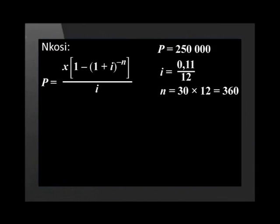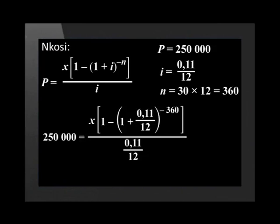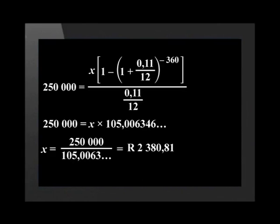Some people prefer to substitute the values first and then solve for x. Let's redo Nkosi's calculation using this method. We substitute to get: 250,000 equals x multiplied by open bracket one minus open bracket one plus 0.11 divided by 12 close bracket to the power of minus 360 close bracket, over 0.11 divided by 12. Punching these values into the calculator gives us 105,006.346. We now divide both sides of the equation by this number, giving us the same answer of R2,380.81.